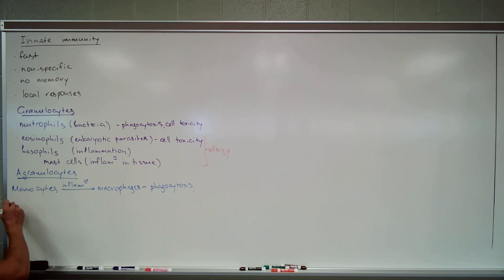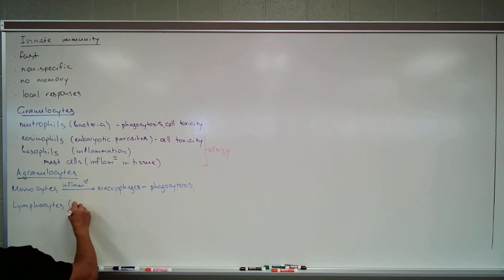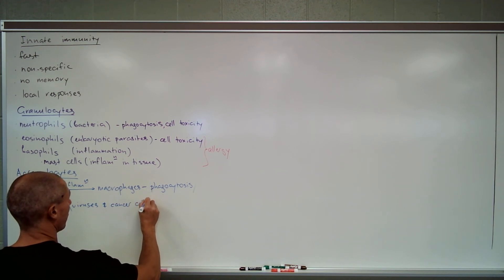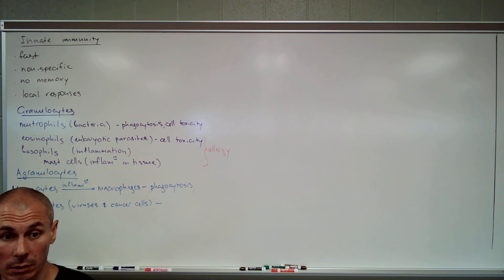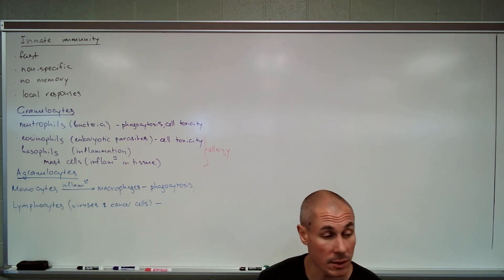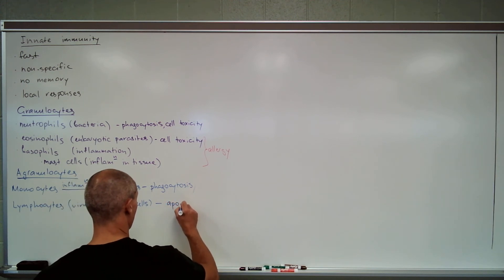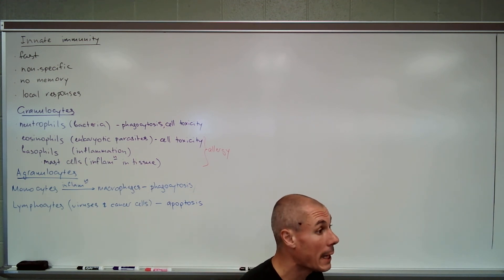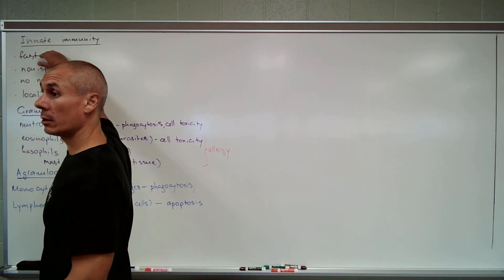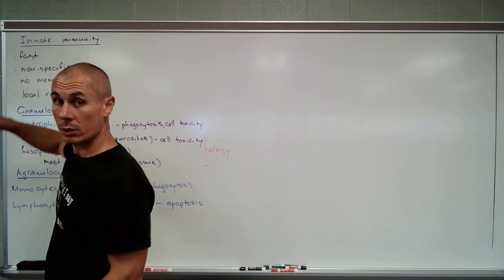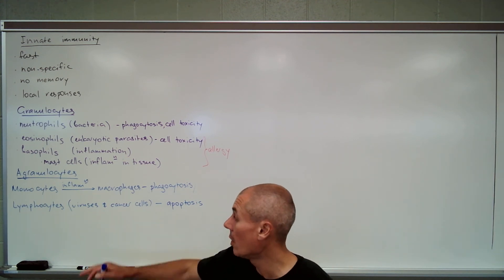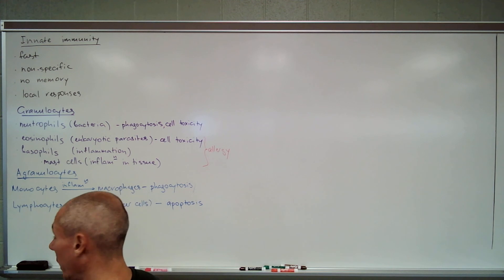Now lymphocytes, which target mostly, they kill virus-infected and cancer cells by apoptosis. So far are you following me? Good. Now which immune response are we talking about? Innate, right. So there are some lymphocytes, many actual lymphocytes that participate in adaptive responses. We're going to talk about them separately. For innate responses I want you to be aware of so-called NK cells.